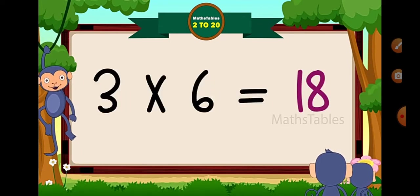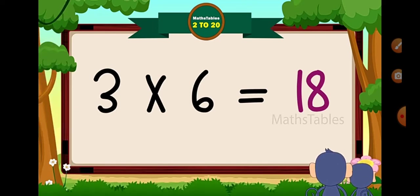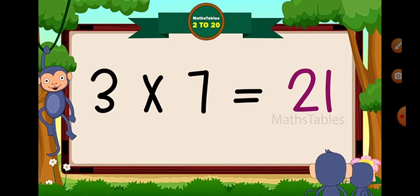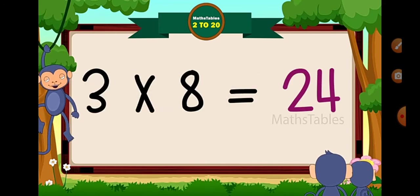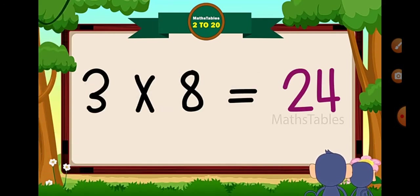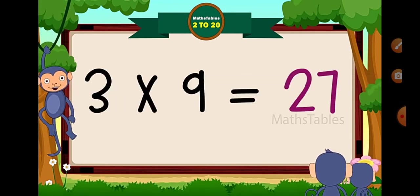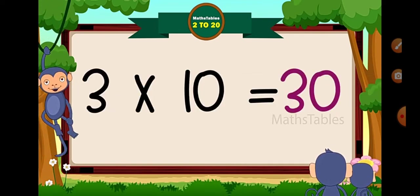3 × 6 = 18. 3 × 7 = 21. 3 × 8 = 24. 3 × 9 = 27. 3 × 10 = 30.